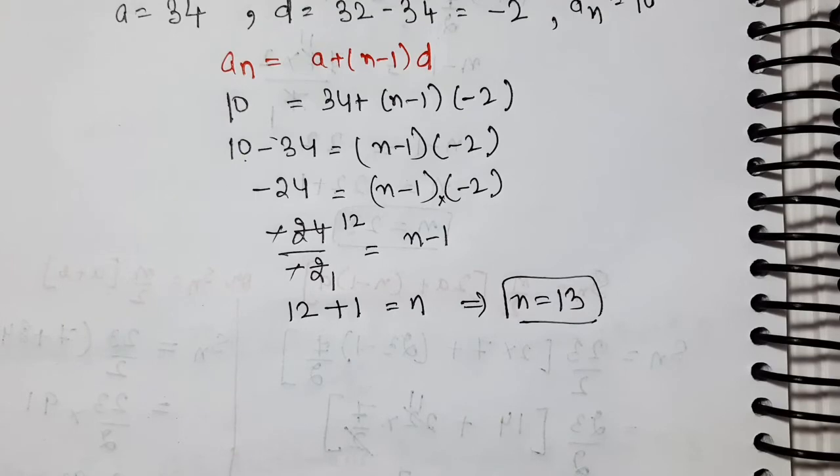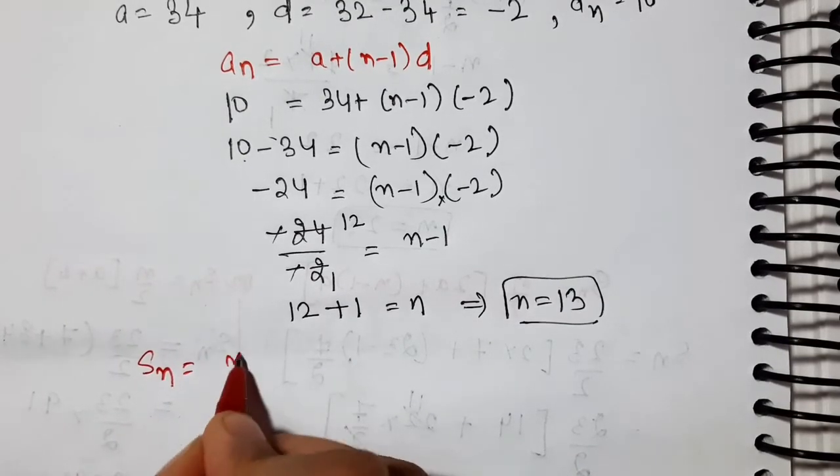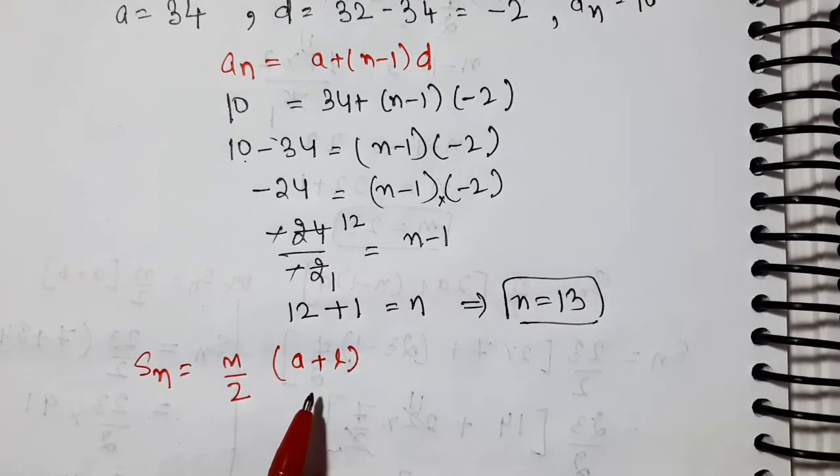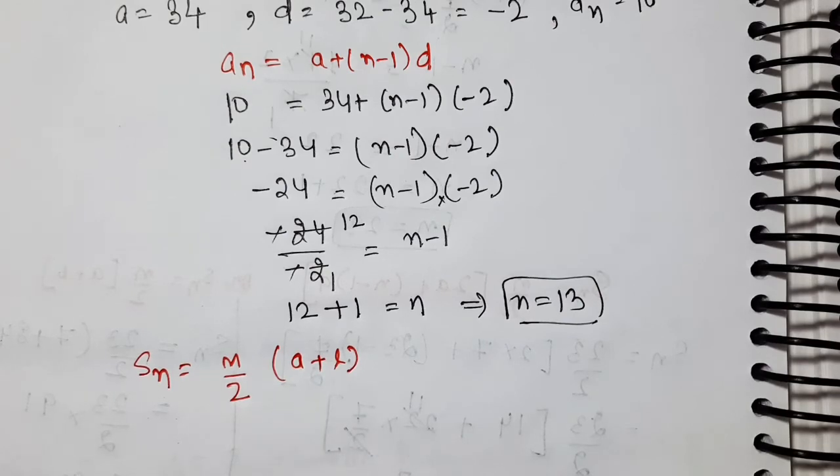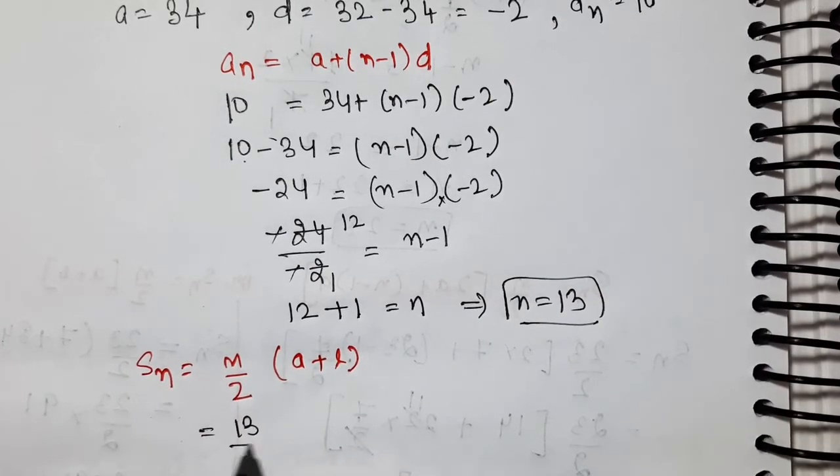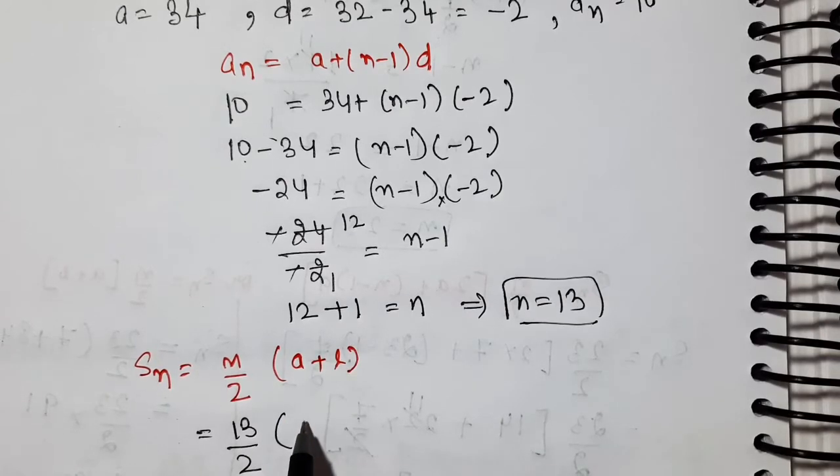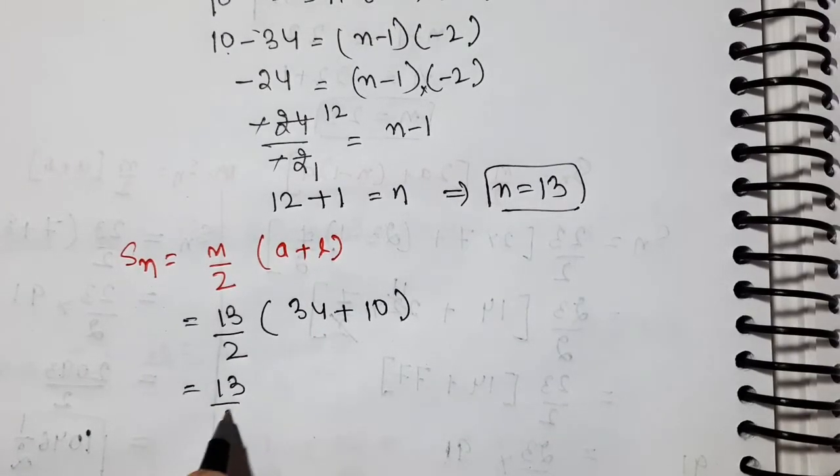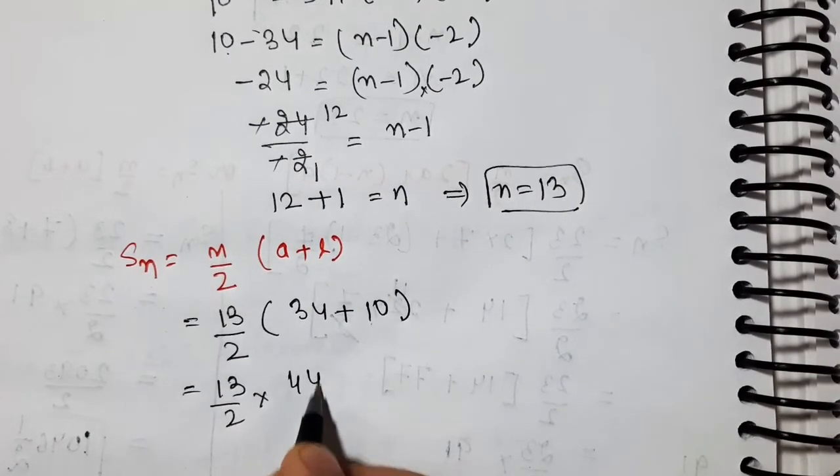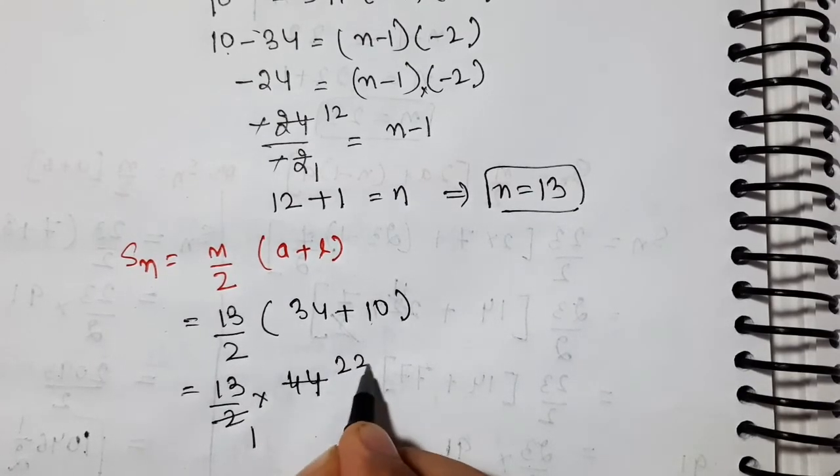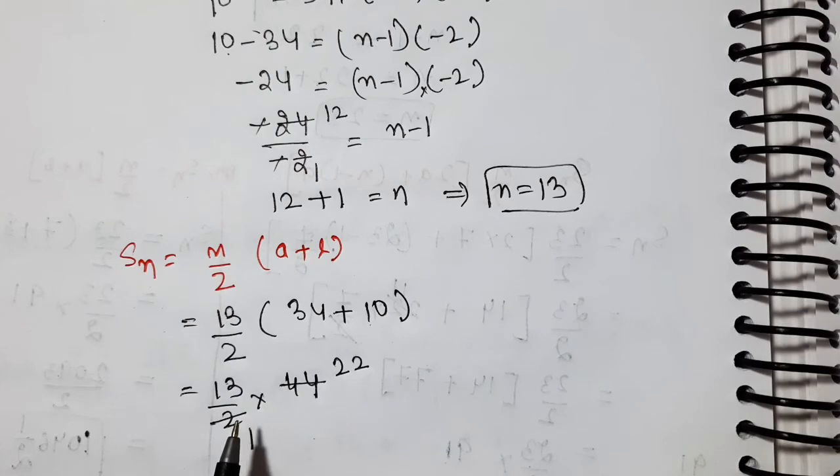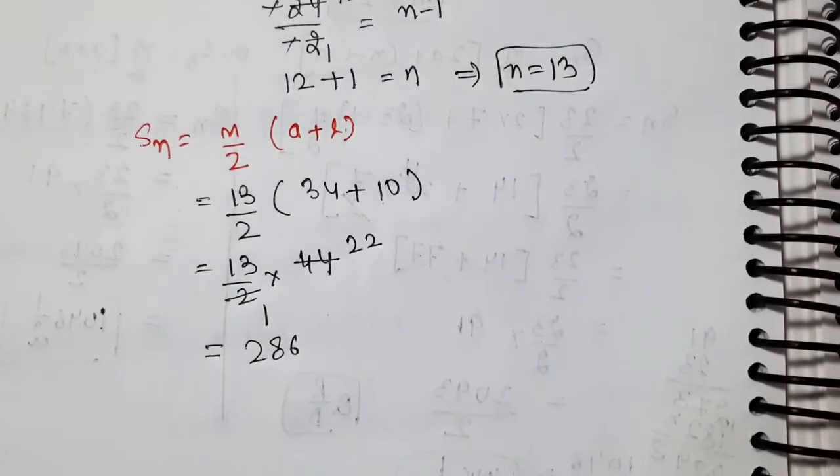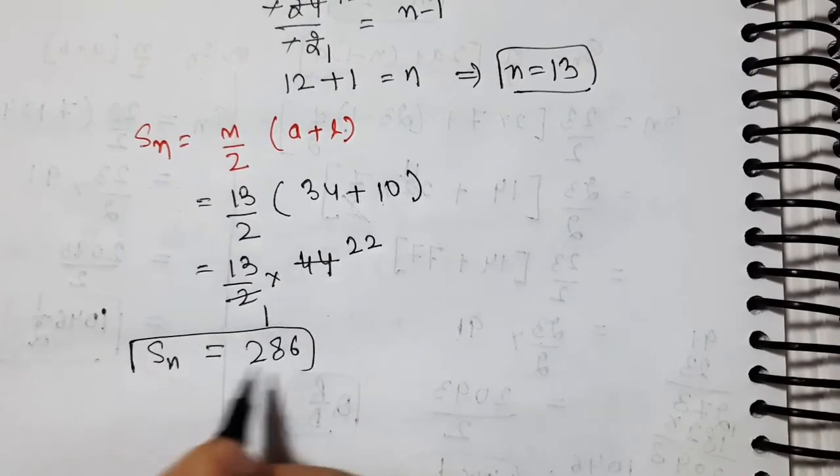So here also multiplying these two gives 2093 upon 2. If we change this to mixed fraction, it becomes 1046 and a half. So same answers. You can do it however you like. If you don't want to remember this formula, just remember this one and all sums will be solved with it. Now let's do the second part.